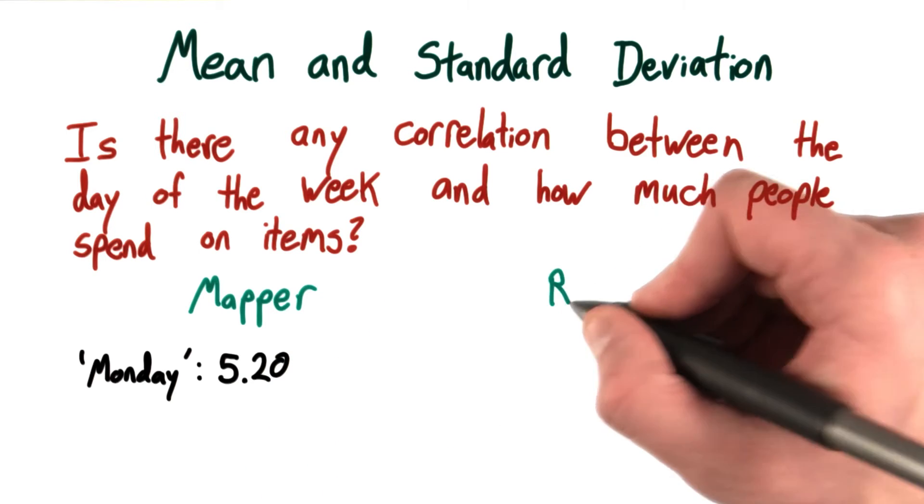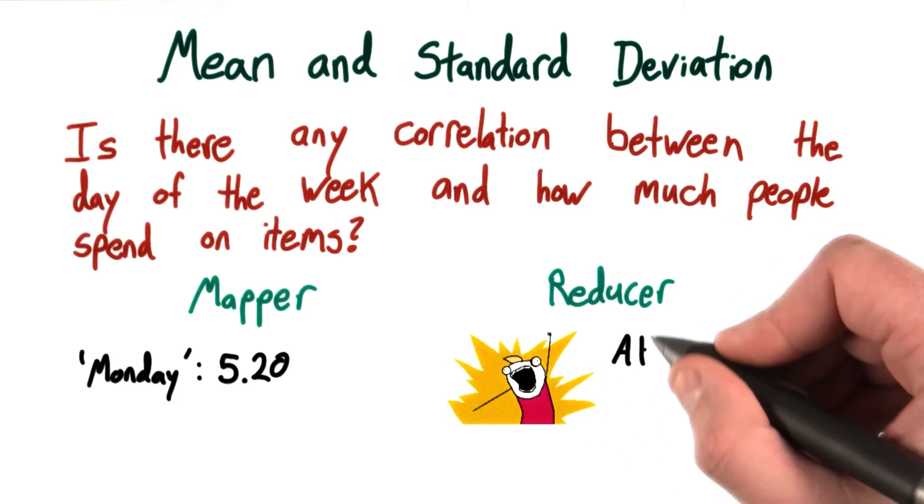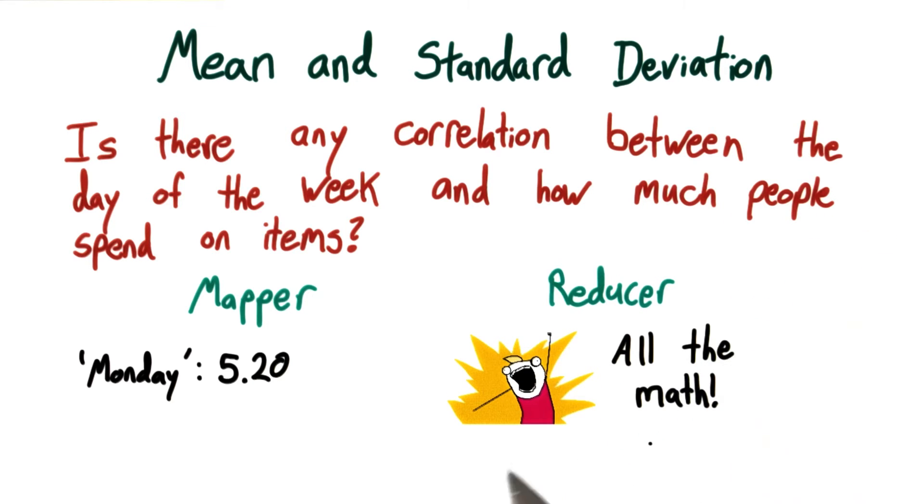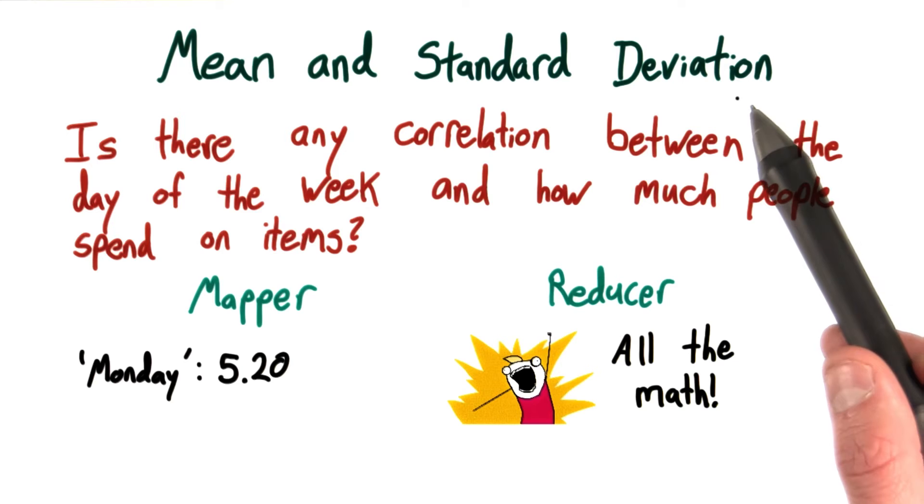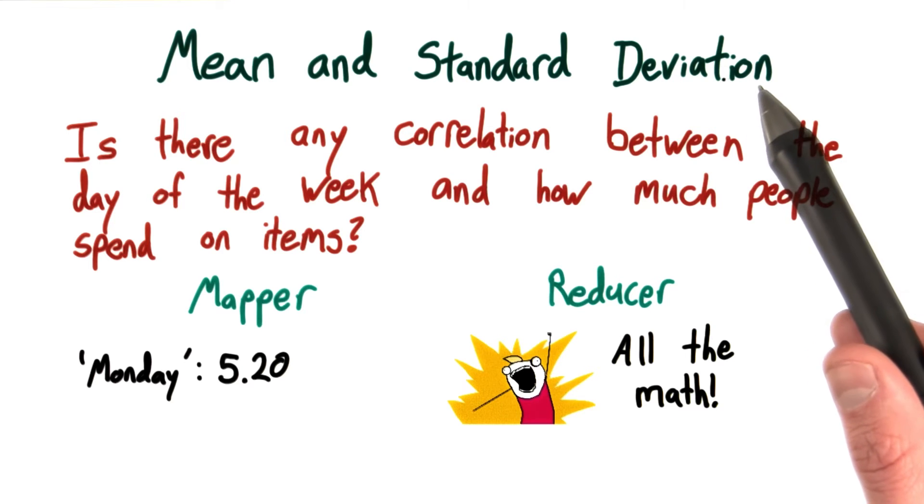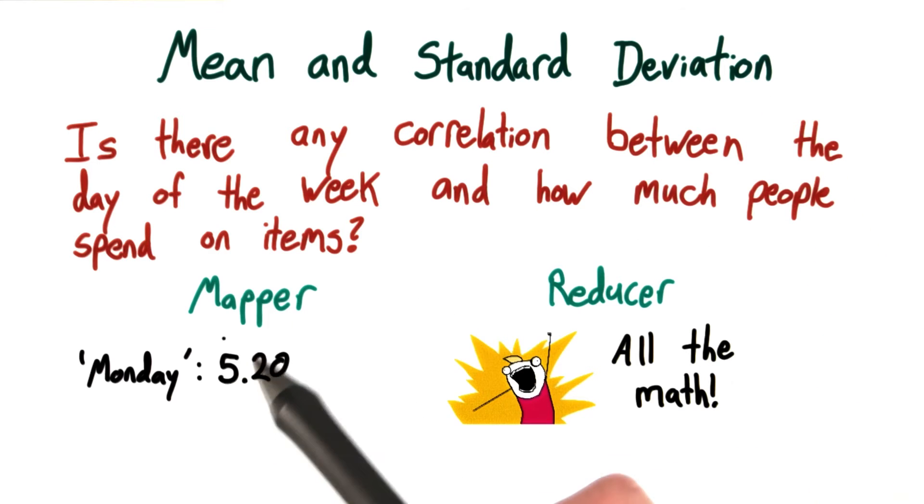What does that leave for the reducer? Well, it leaves all the math for the reducer. And the general reason for this rule of thumb, for what the mapper and reducer are doing, comes from the fact that oftentimes with these summary statistics, you sort of need to know all of the statistics or all of the parent data before you can make any calculations. So we don't want to jump the gun and have the mapper do calculations before it's ready.